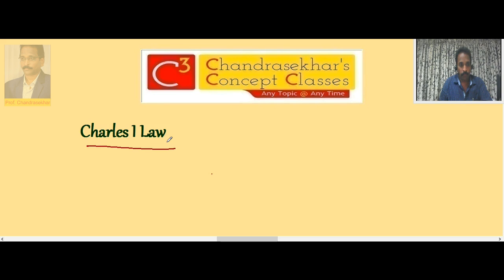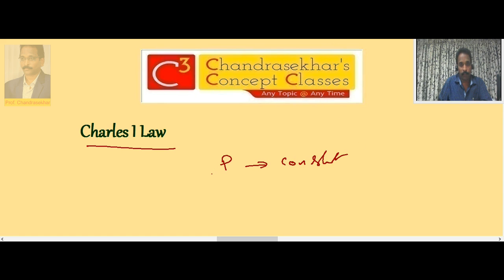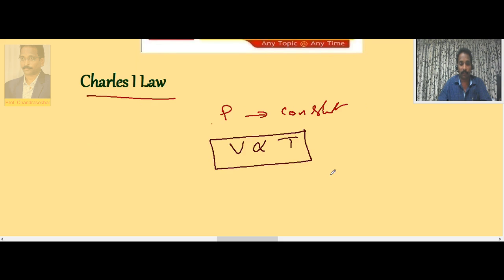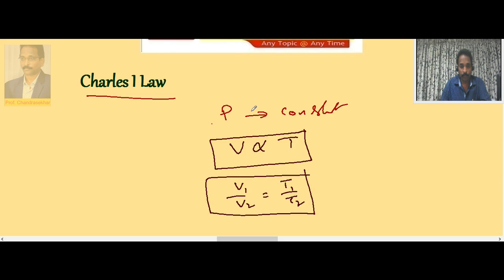Charles' First Law: keep pressure constant, then the volume of a gas is directly proportional to absolute temperature — V directly proportional to T if you keep P constant. Or V₁/T₁ = V₂/T₂. This is valid when you keep P constant and for a given mass of gas.